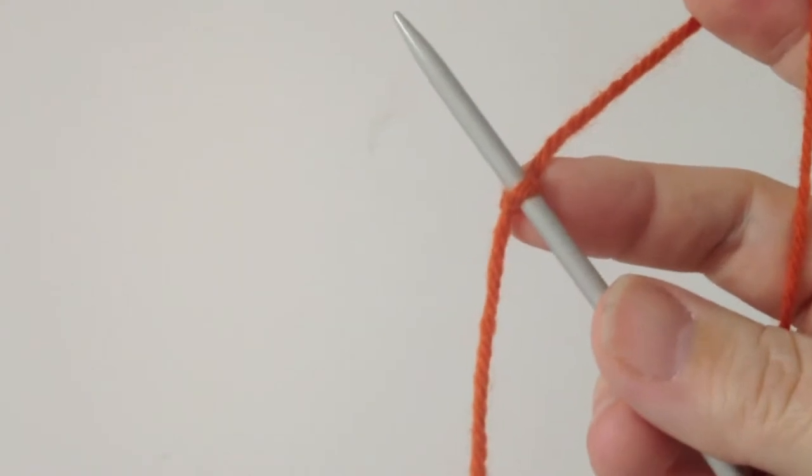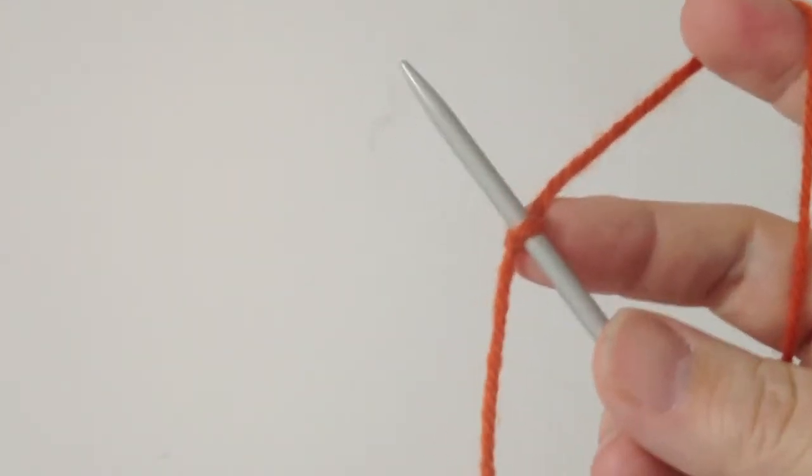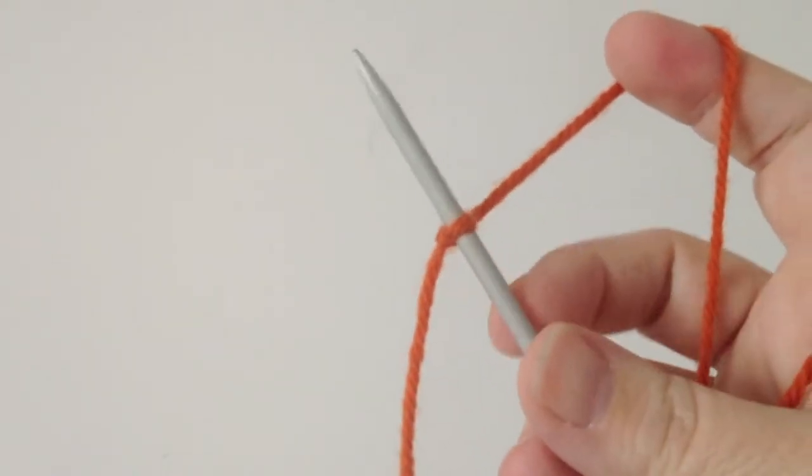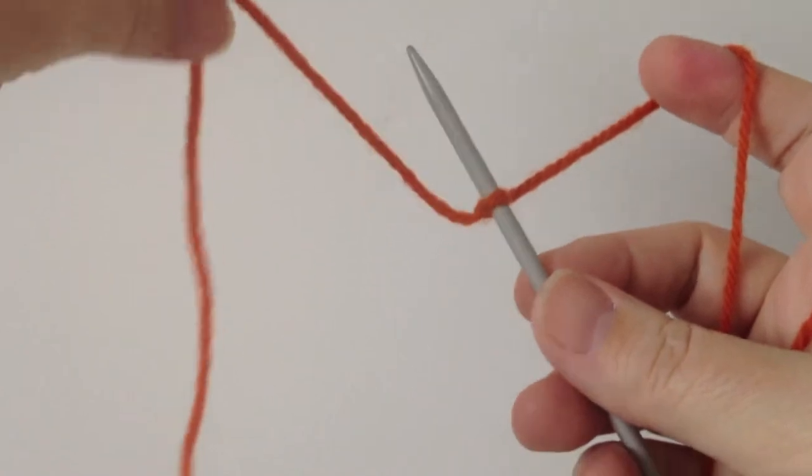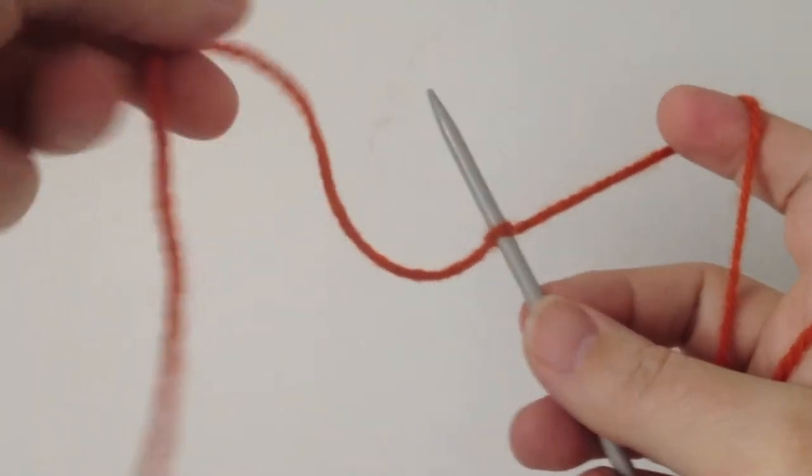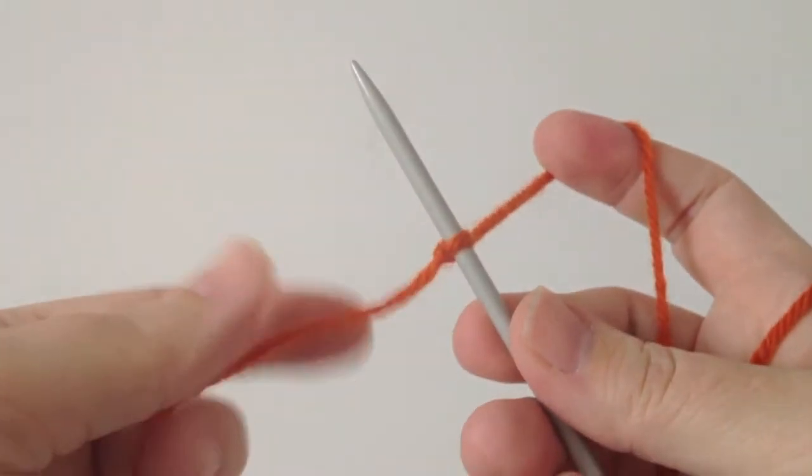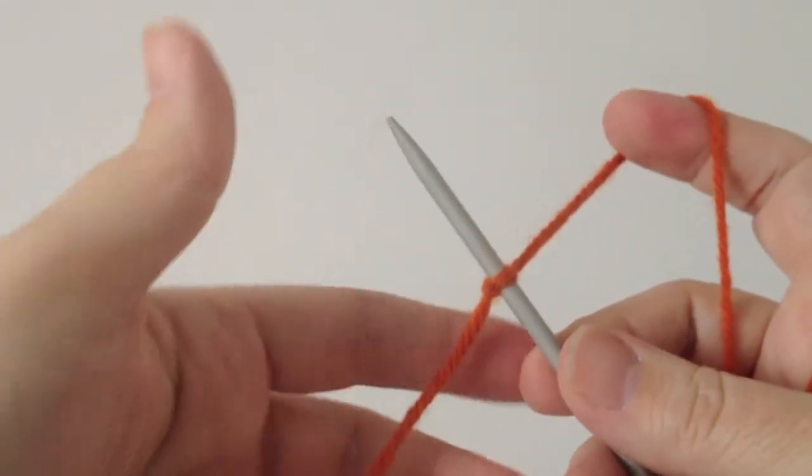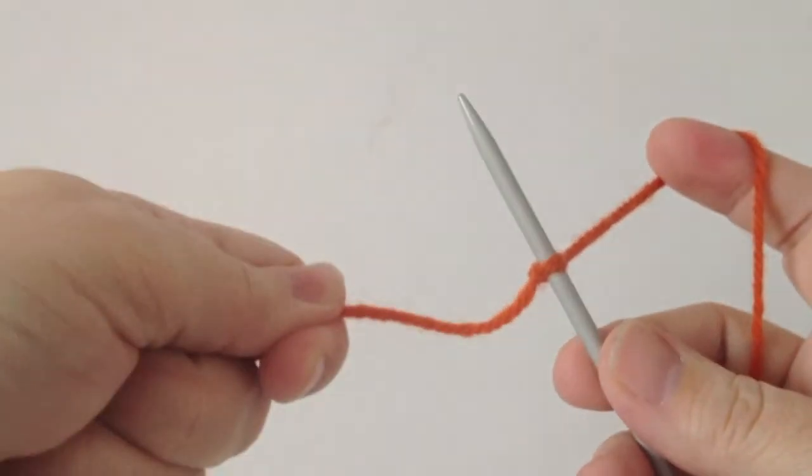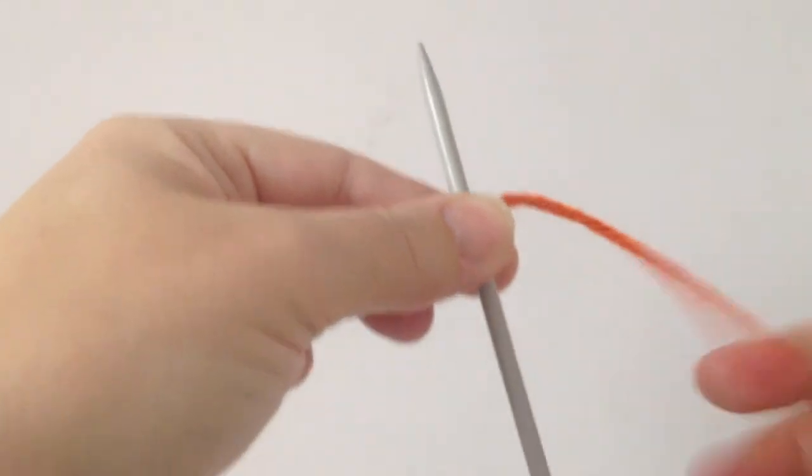Basically what you do is make a slipknot and you have a long tail on your left. For the purpose of this demonstration I just made a short tail. Your working yarn is in the right hand where the ball is.